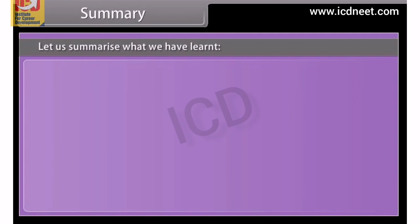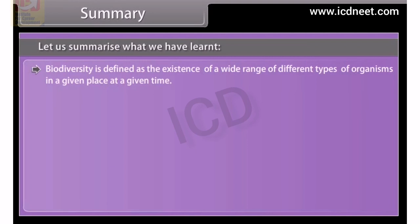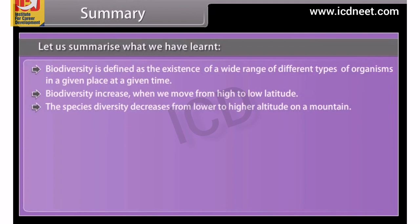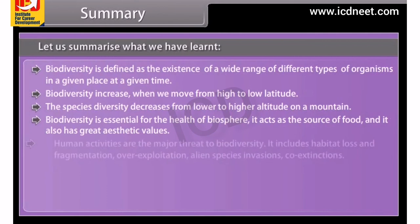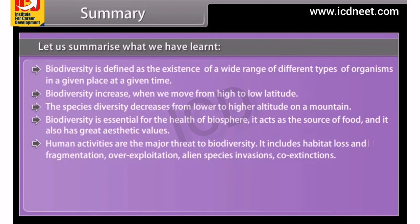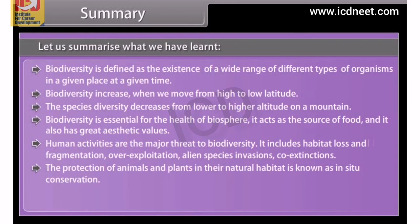Summary. Biodiversity is defined as the existence of a wide range of different types of organisms in a given place at a given time. Biodiversity increases when we move from high to low latitude, and species diversity decreases from lower to higher altitude on a mountain. Biodiversity is essential for the health of the biosphere, acting as the source of food and having great aesthetic value. Human activities are the major threat to biodiversity, including habitat loss and fragmentation, overexploitation, alien species invasions and co-extinctions. The protection of animals and plants in their natural habitat is known as in-situ conservation.